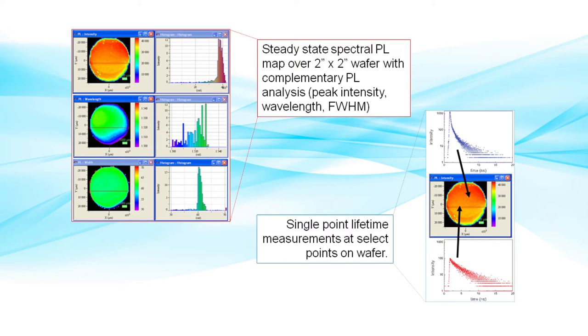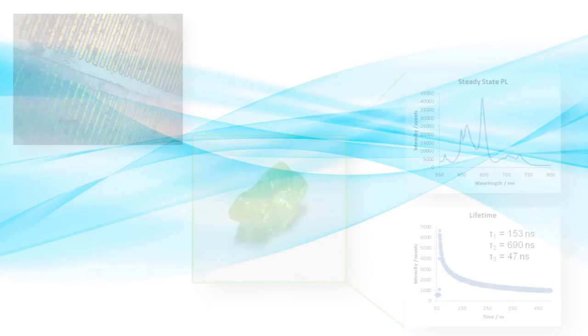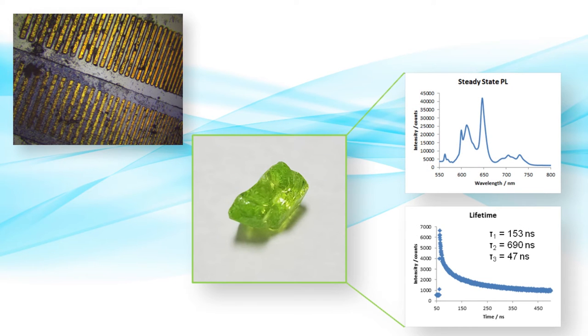For example, in photovoltaic samples, time-resolved photoluminescence can provide a probe of the efficiency of the device under test before fabrication, allowing for rapid material process changes to improve yield.